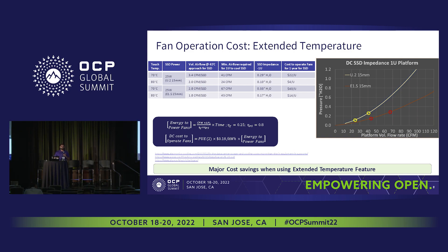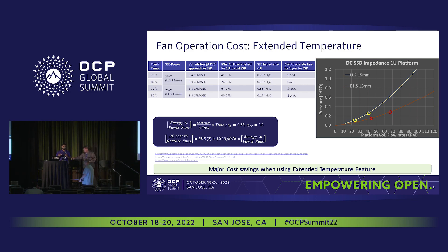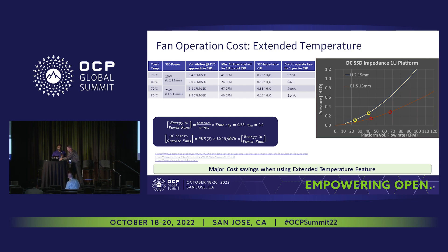The cost of operation for one new system for one year of SSD cooling: if you have a 70 C touch limit it's going to be almost $22. However, if you go to 80 C touch limit, you can reduce the cost all the way down to $4. So extended touch limit on our SSDs is not only eco-friendly, it also benefits the cost of operation that the fans have to run. It's very beneficial from all angles.